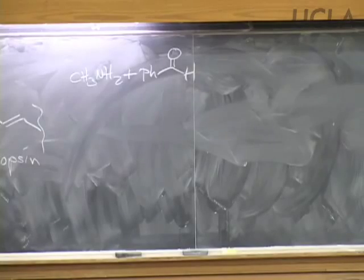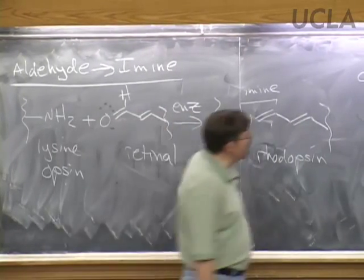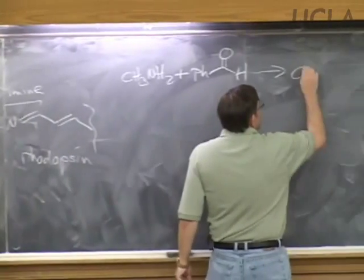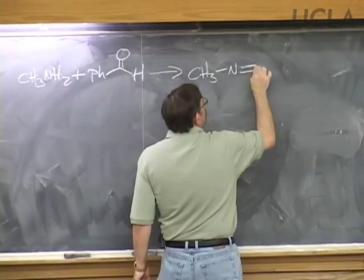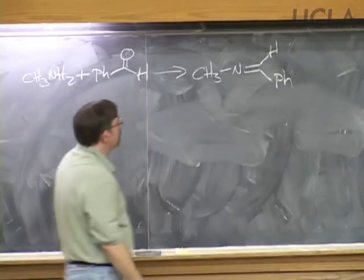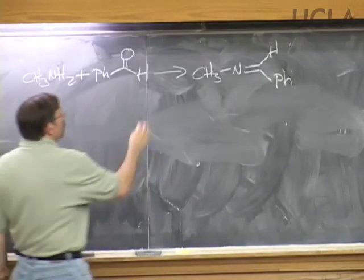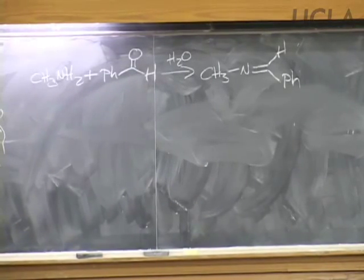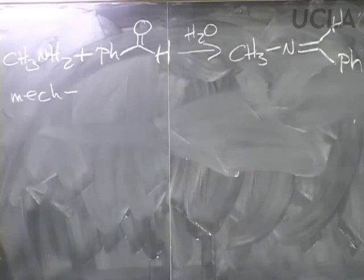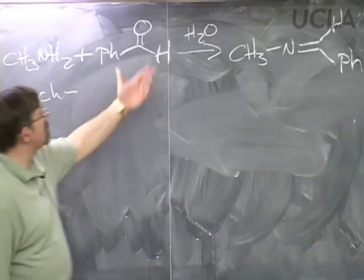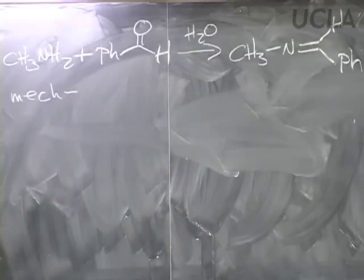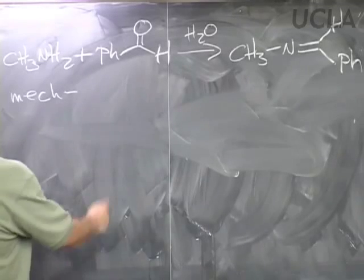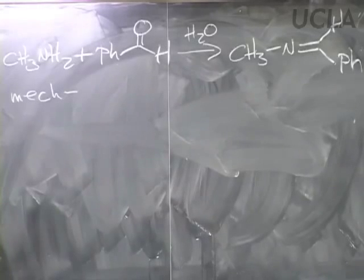In our reaction, the carbonyl of the aldehyde becomes the nitrogen of the imine. When we put those together, we get CH3N with a hydrogen and a phenyl group. We'll also use some water as a proton shuttle. Now let's figure out the mechanism. We have three things: water, aldehyde, and amine. Amine is a better nucleophile than water—not a stellar nucleophile, but it's okay. And aldehydes are among the most electrophilic of all the carbonyl-containing compounds we've talked about.